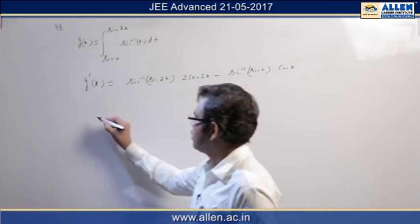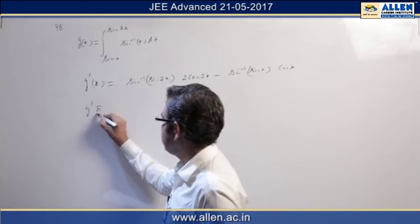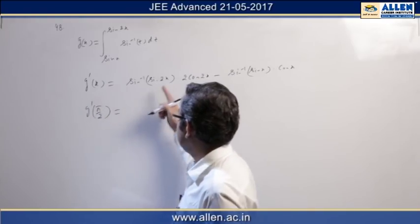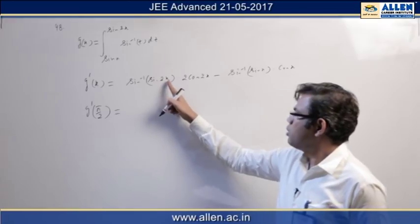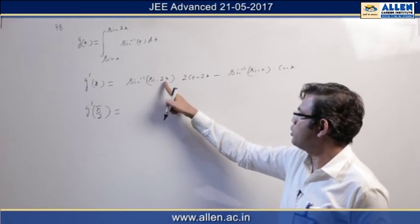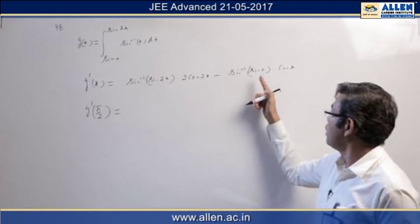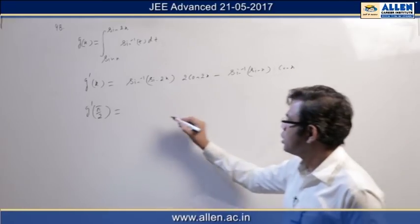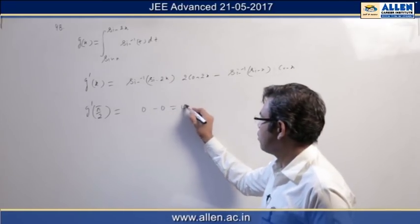Now if I go for g'(π/2), we can clearly see that sin π becomes 0 and sin inverse 0 is 0, and over here cos(π/2) is 0. So we got 0 minus 0 equal to 0.